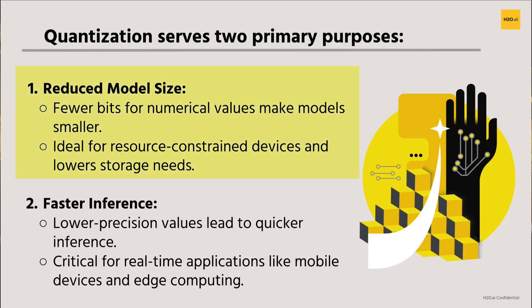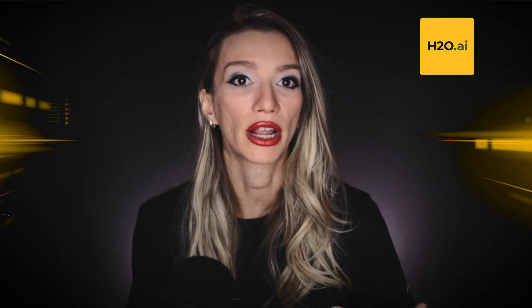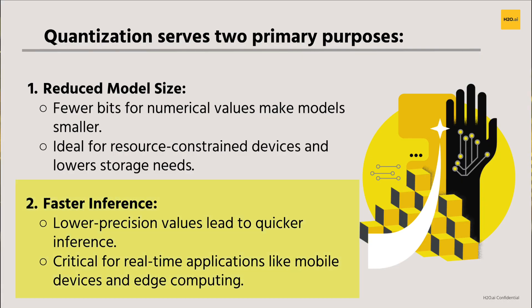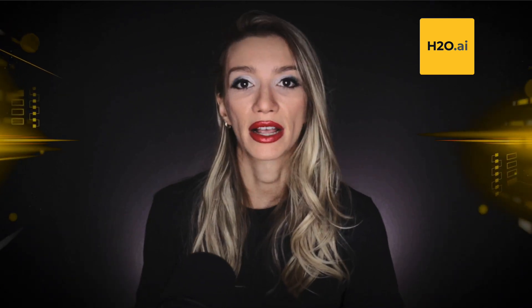Quantization is employed primarily for two reasons. First, reducing model size: by using fewer bits to represent numerical values, the model size becomes smaller. Smaller models occupy less memory, making them more efficient for deployment on resource-constrained devices and reducing storage and memory requirements. Second, speeding up inference: using lower precision numerical values can result in faster inference times.